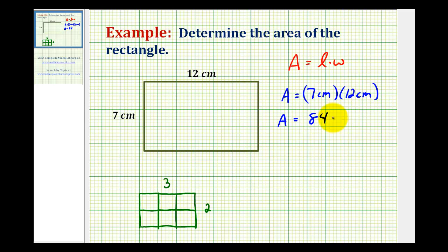And centimeters times centimeters would be centimeters squared. This would be the area of the given rectangle, which means 84 square centimeters would fit perfectly inside this rectangle.